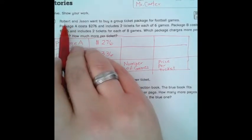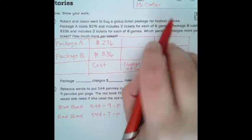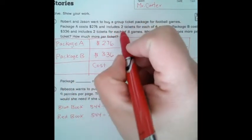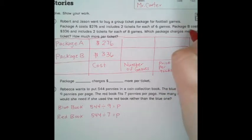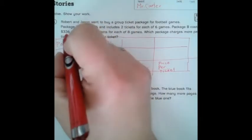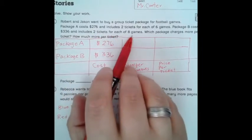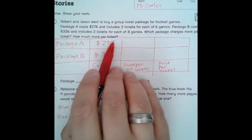So, number one. Robert and Jason want to buy a group ticket package for football games. Package A costs $276 and includes two tickets for each of six games. Package B costs $336 and includes two tickets for each of the eight games. Which package charges more per ticket and how much more per ticket?